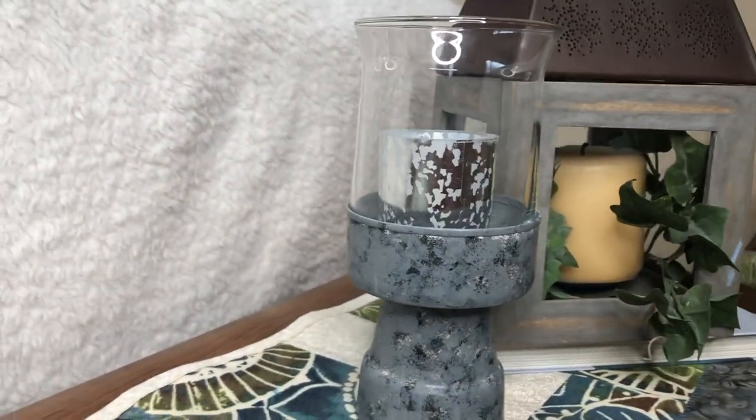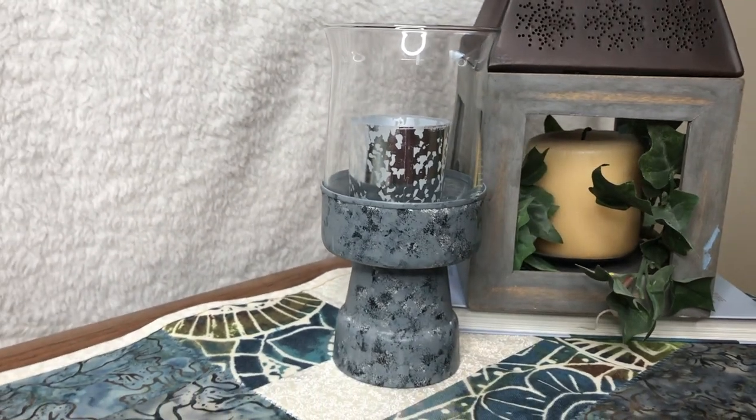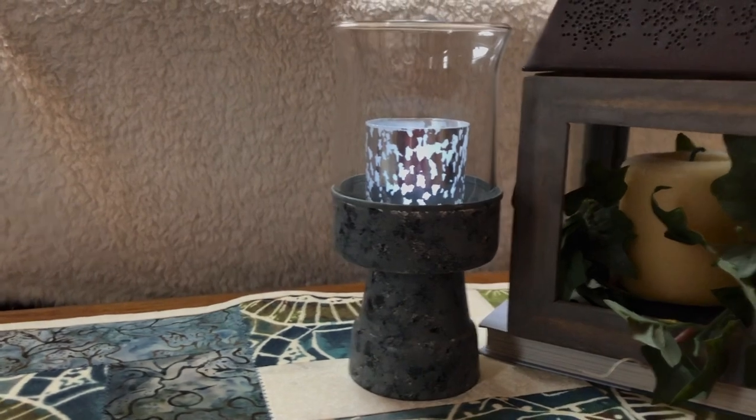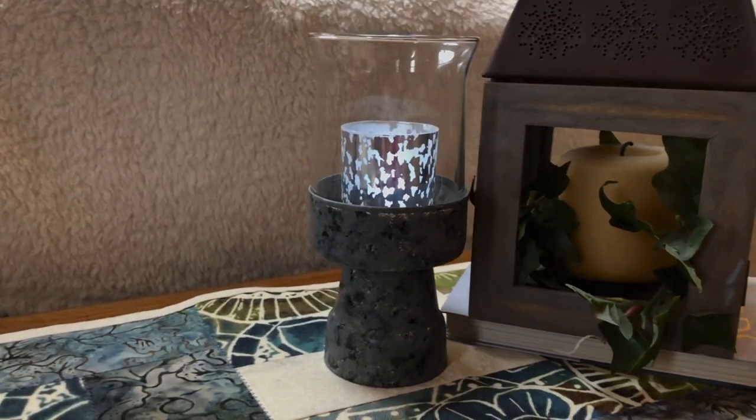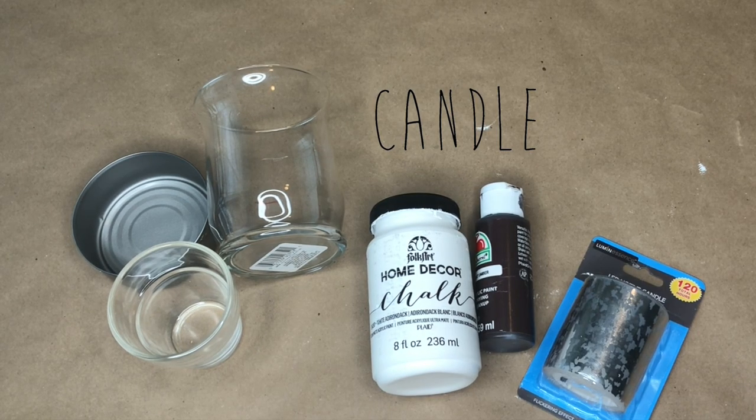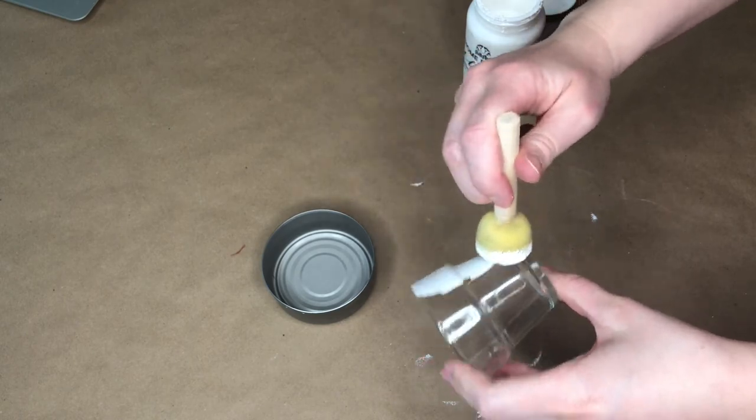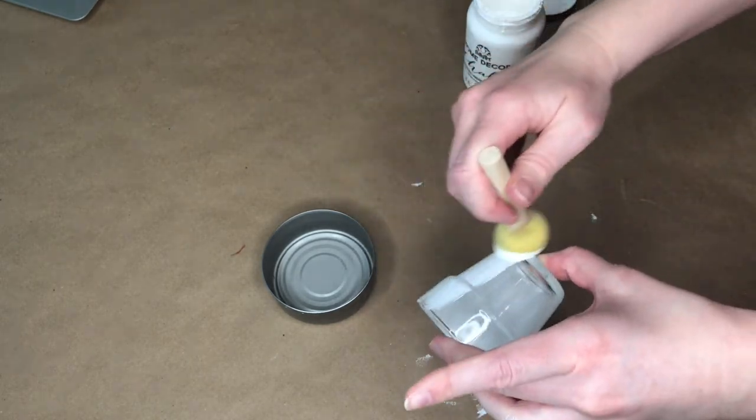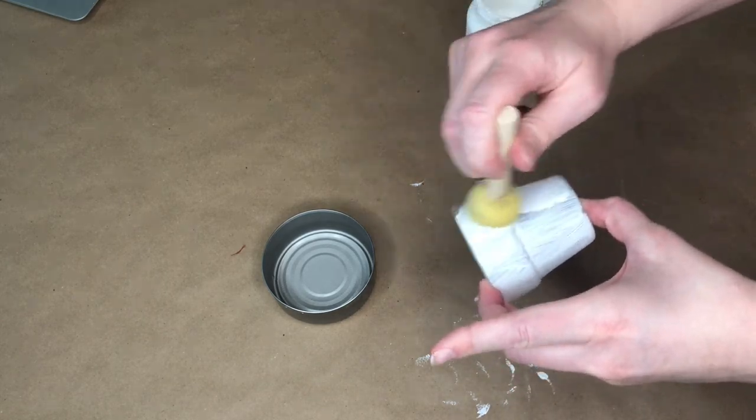The last modern farmhouse DIY is a candle holder made out of a tuna can. Here's what you need to create this DIY that looks great during the day and even better at night. To start off this simple DIY, I'm taking this small glass jar that I got from the Dollar Tree in the set and I'm painting it white with some chalk paint.